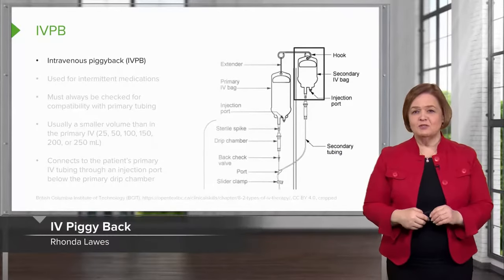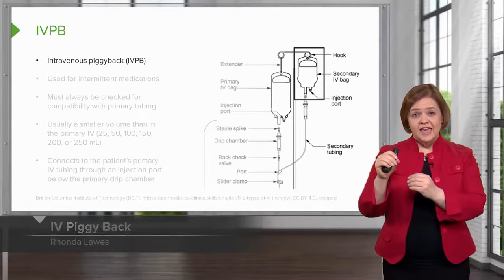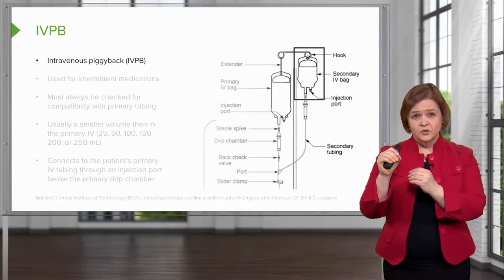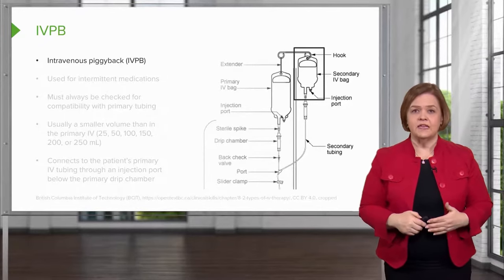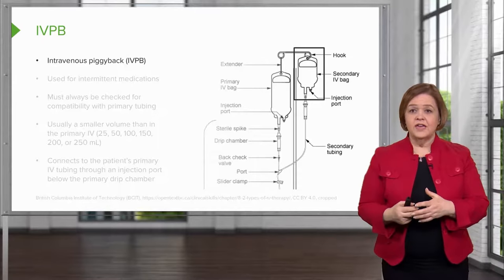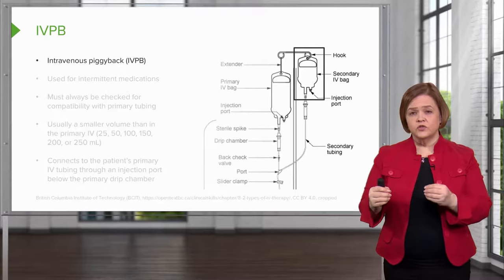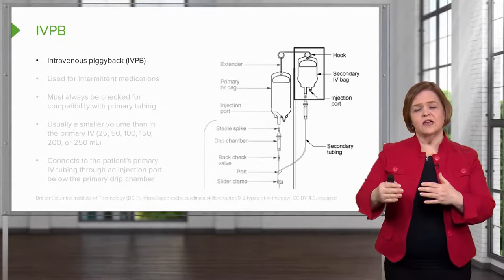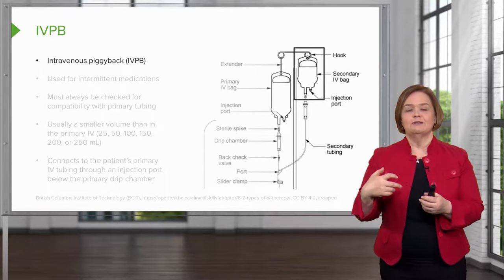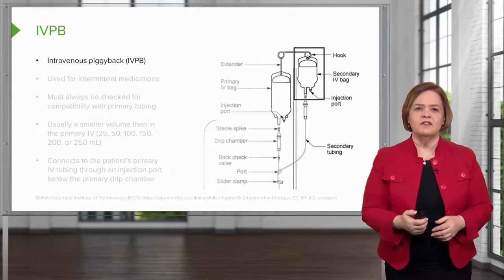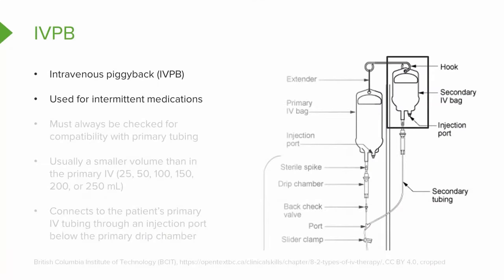An IV piggyback is a smaller bag with a lower amount of solution in it. You'll often see people say 'give this medication IVPB' — that means IV piggyback. The cool part is that it's a good volume, so we can give medications over a slower period of time with lots of fluid to dilute it; otherwise you'd have to stand there with a syringe and slowly push it in. IV piggybacks are used for intermittent medications — anything from antibiotics, a little bit of potassium, any medication given every six hours or every eight hours.